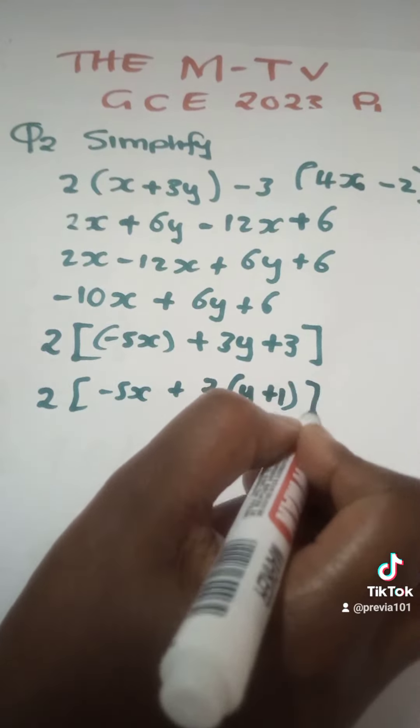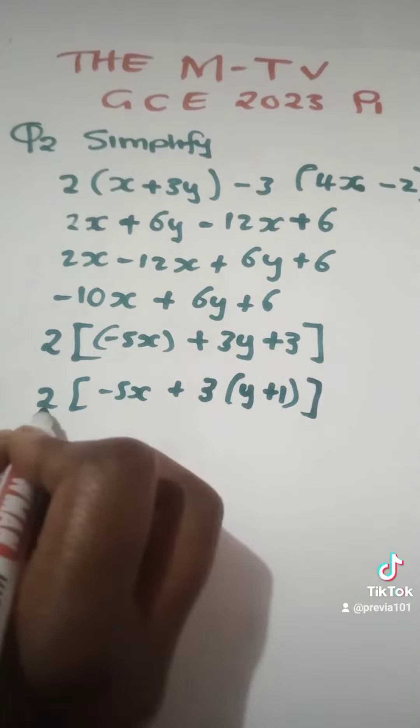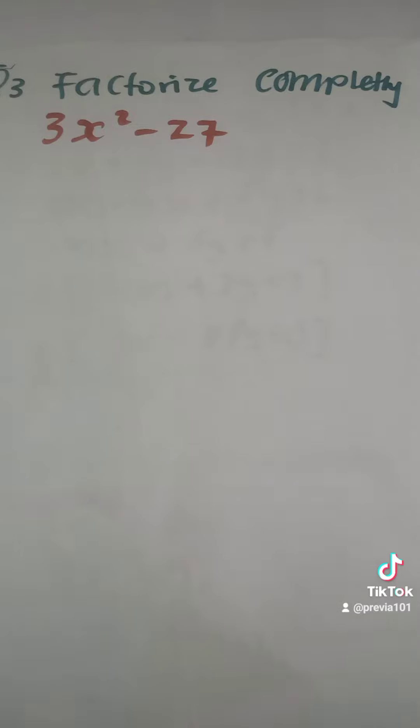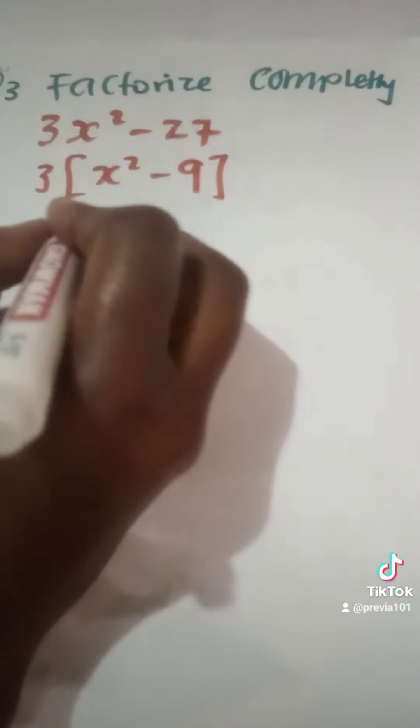Now for the next part. The common factor here is 3. If you went with x squared minus 9, you can simplify what is in the brackets by rewriting it as x squared minus 3 squared.